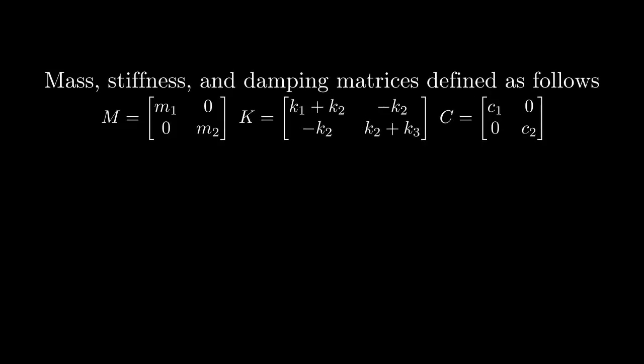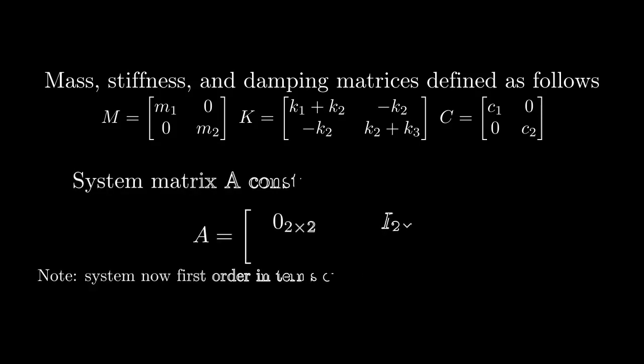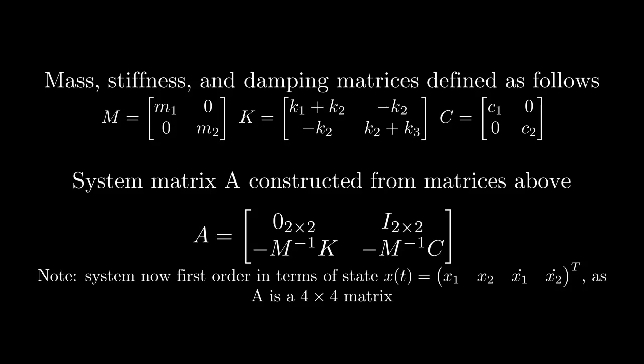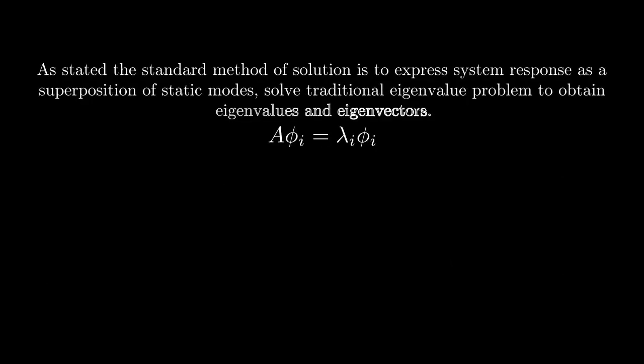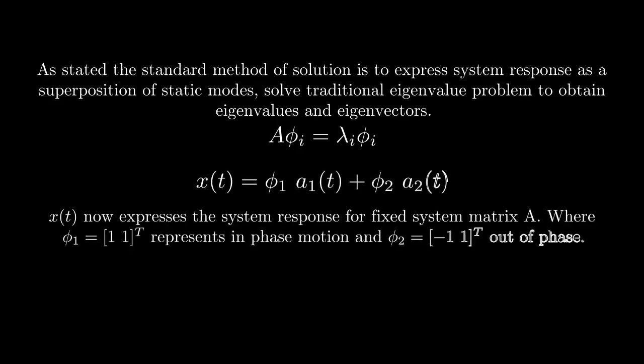We can define mass, stiffness, and damping matrices, allowing us to convert the problem into a first-order system. At this point, we may solve the traditional eigenvalue problem A phi equals lambda phi. In doing so, we achieve a set of static modes that represent any solution for this fixed system.